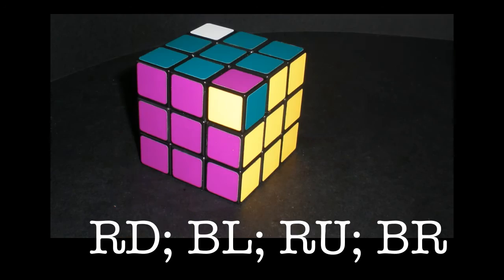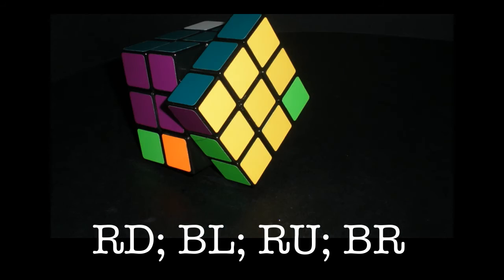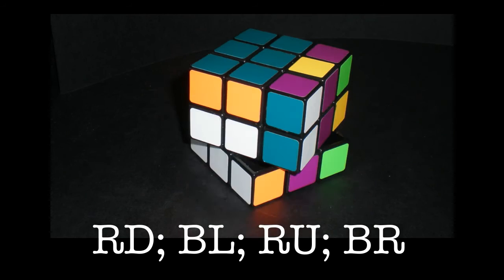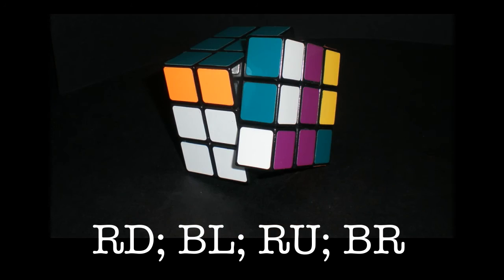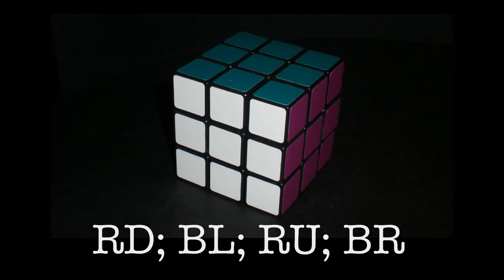Then choose a corner that isn't in the correct colour order and use this move. Then turn the top layer only and perform the same thing until each of the colours are in the correct order and this should solve the puzzle of the Rubik's Cube.